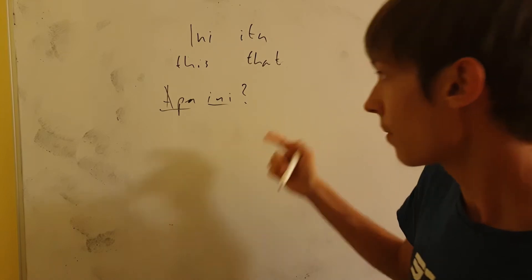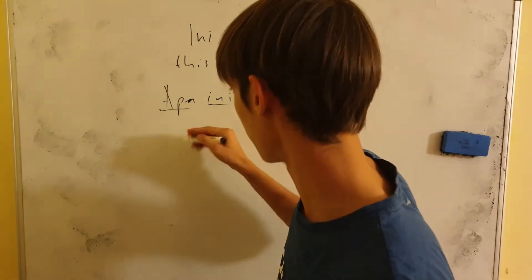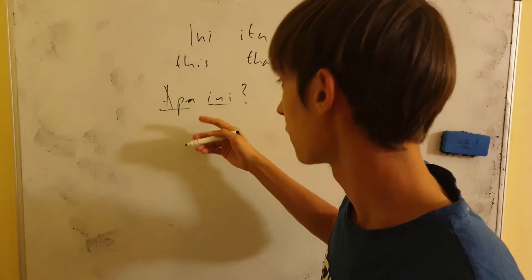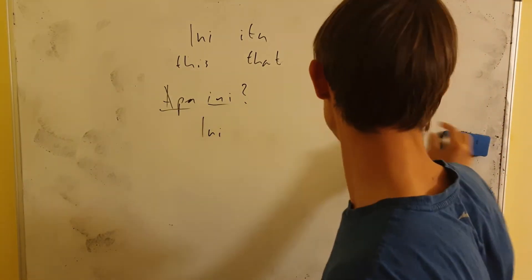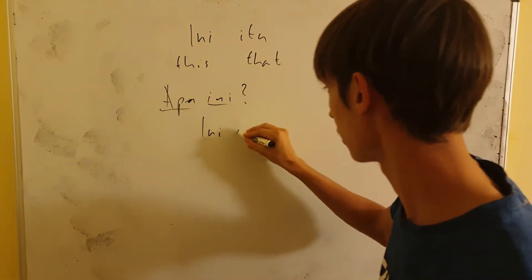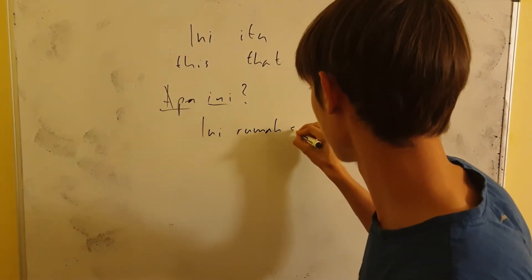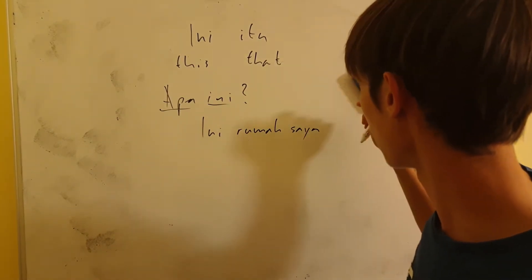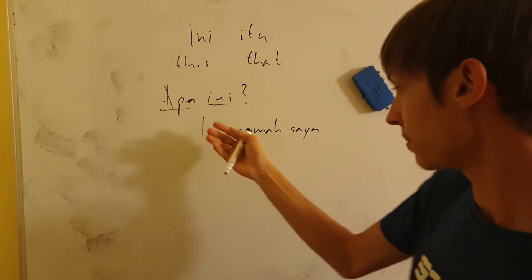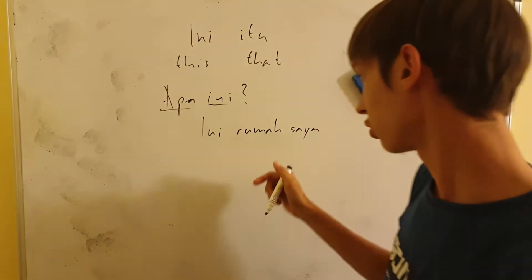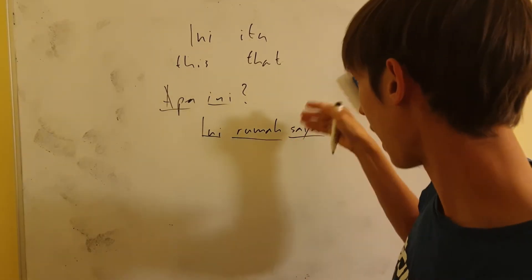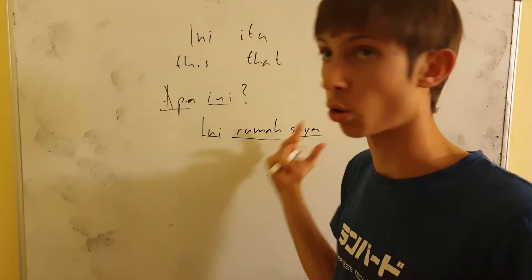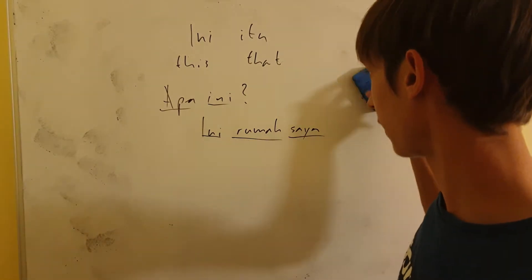So APA INI. And now, for example, you can say INI RUMAH SAYA. This means this is my house. So INI is this, RUMAH is house and SAYA is I. But if you put it after it, it means that it's your house. So this is the kind of idea.